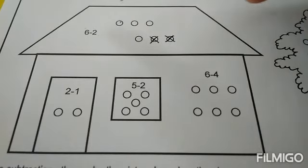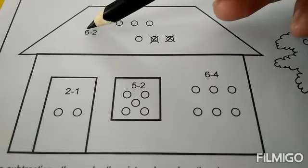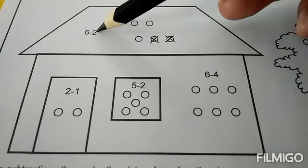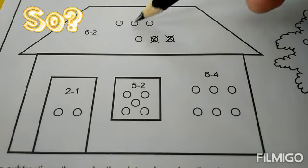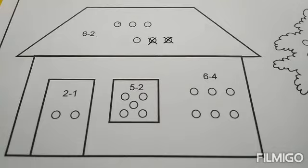One, two, three, four. So six minus two equals four. And what is the color? Let's see the clue here.